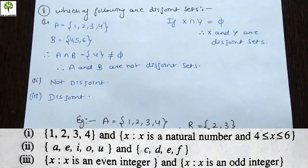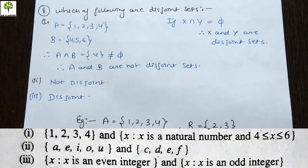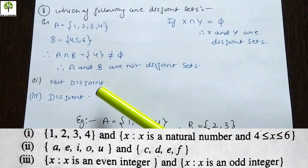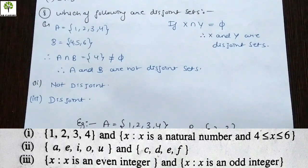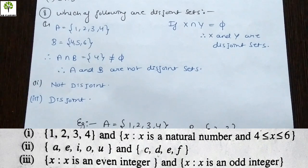After the first part, in the next part the sets are all vowels {a, e, i, o, u} and {c, d, f}, and if we check the connection, the vowels and consonants share element 'a' — wait, actually checking the second set {a, e, i, o, u} and {c, d, f}, these are clearly disjoint. And the third part involves even integers and odd integers, with no connection between them.